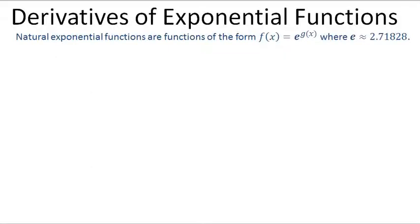Let's talk about the derivative of a natural exponential function. A natural exponential function is one of the form f of x equals e to the g of x, where e is the base called the natural base, equal to about 2.71828. It's like pi — it's irrational. And when we deal with base e, we call that a natural exponential.